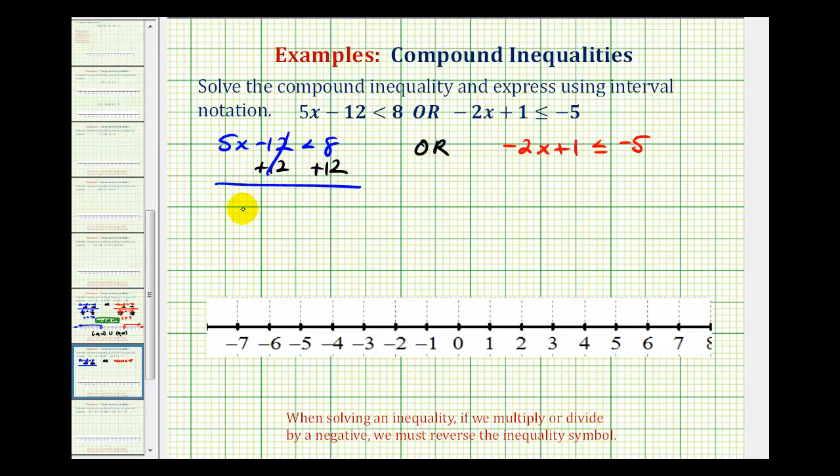This would be 0, so we have 5x is less than 20. And now we'll divide both sides by positive 5. So we have x is less than positive 4.